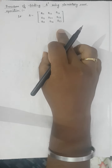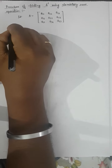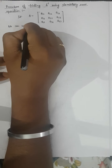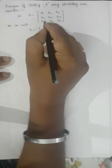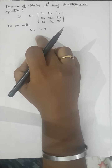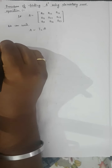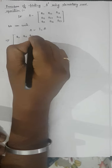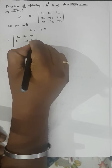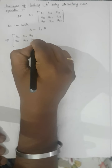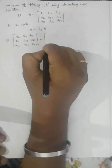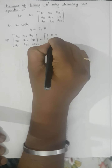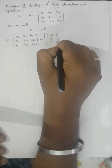To find the inverse, we write capital A equal to I₃ times A. Why I₃? Because A is a 3×3 square matrix. So we place the value of A — a11, a12, a13, a21, a22, a23, a31, a32, a33 — with I equal to the 3×3 identity matrix [1,0,0; 0,1,0; 0,0,1] times A.